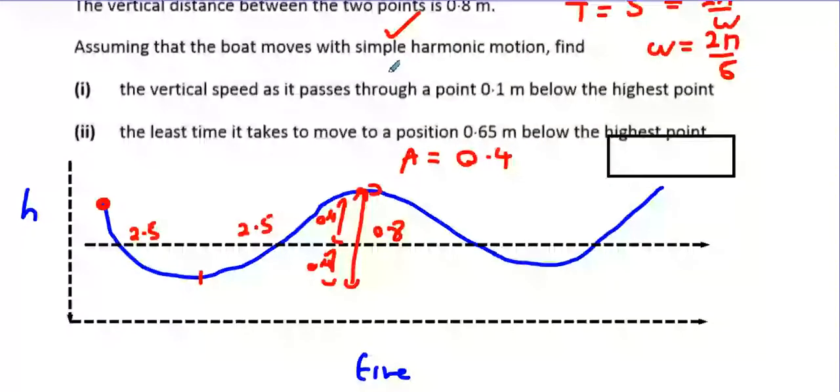Assuming that the boat moves with simple harmonic motion, find the vertical speed at a point 0.1 below the highest point. 0.1 below the highest point, which would be around here.